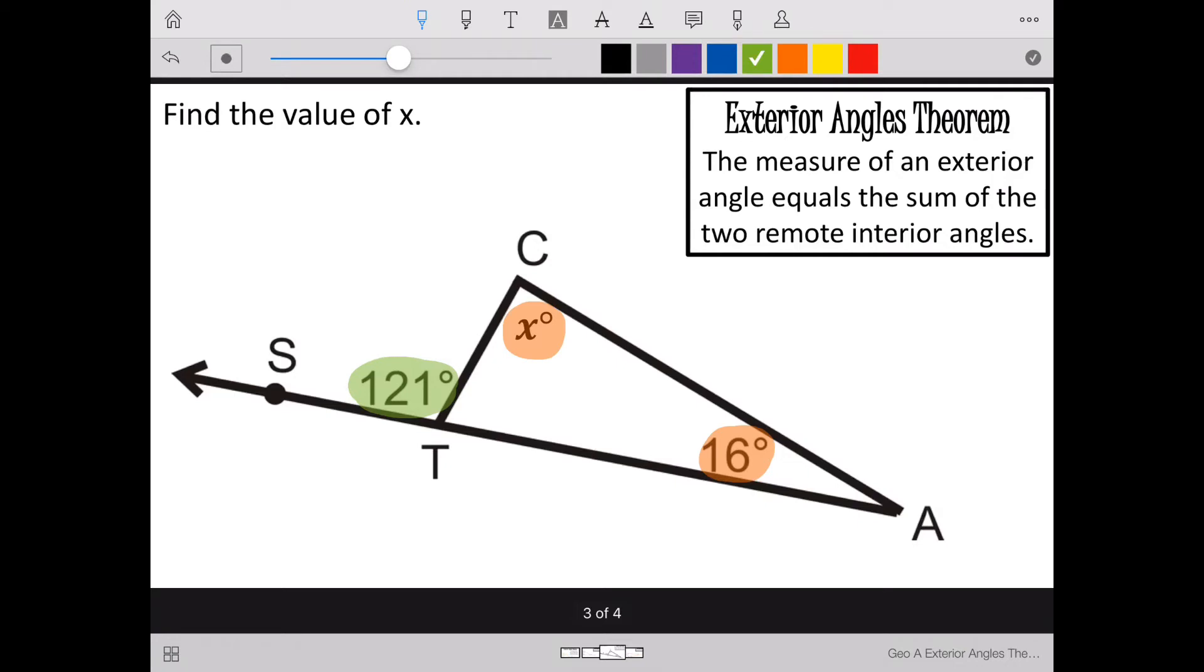So we can make a nifty little equation here. Take my exterior angle, and I need to make it equal my two remote angles added together. Now if I solve this equation, I can figure out what x is. So if I subtract 16 from each side of this equation, 121 minus 16 makes 105. So x is 105 degrees.